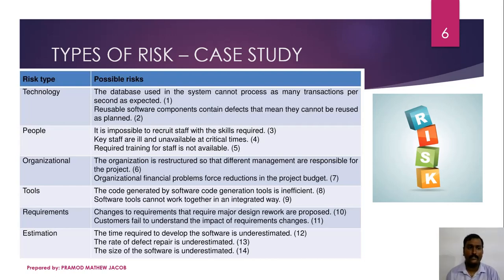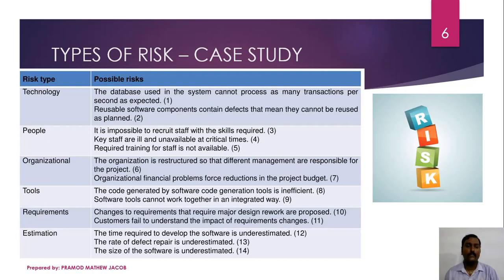The first risk type is the technology type. Possible risks that may occur include the database used by the system being unable to process as many transactions per second as expected, or reusable software components containing defects so that they cannot be reused. The people risk type may include risks like key staff being ill or having other commitments and being unavailable at critical times during development, or required training for staff not being available so that new engineers cannot perform as expected, or it being impossible to recruit staff with the required skills.